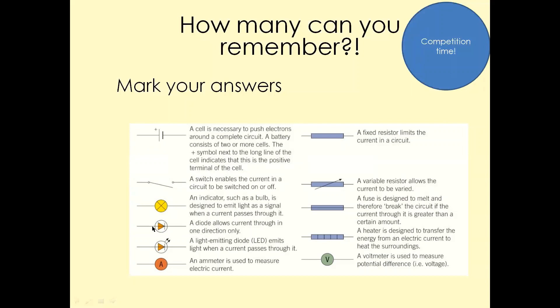This one here, very important, a diode. A diode allows the current to pass through only in one direction. Now this one there, that is only for the students who are doing higher. That is your light emitting diode, the LED, the symbol for LED. The only difference between these two is it's got these little two arrows there that will make it an LED.